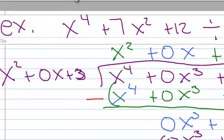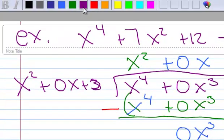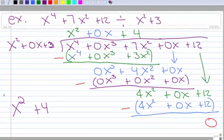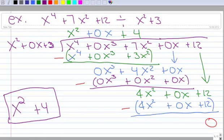So, let's go ahead and write our final result here. And the final result is x squared plus 4. And there's no remainder. It came out nice and even. And that's an example of lots of missing terms doing division with long division.